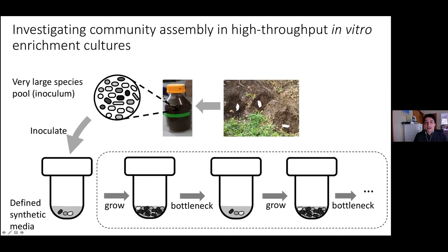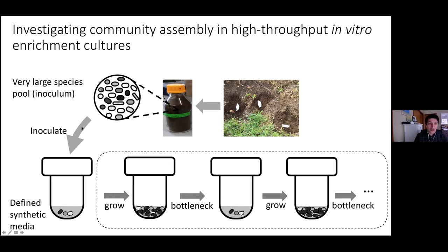Let me go over the experimental pipeline again. We do high-throughput enrichment communities: we take natural samples, filter the bacteria out, and sample from that large diverse pool into small test tubes containing a synthetic medium — M9 plus a given carbon source. These are carbon-limited environments. After inoculating from the species pool, we incubate for 48 hours, then take a random sample of cells into a new test tube with replenished nutrients, and repeat this for multiple days.